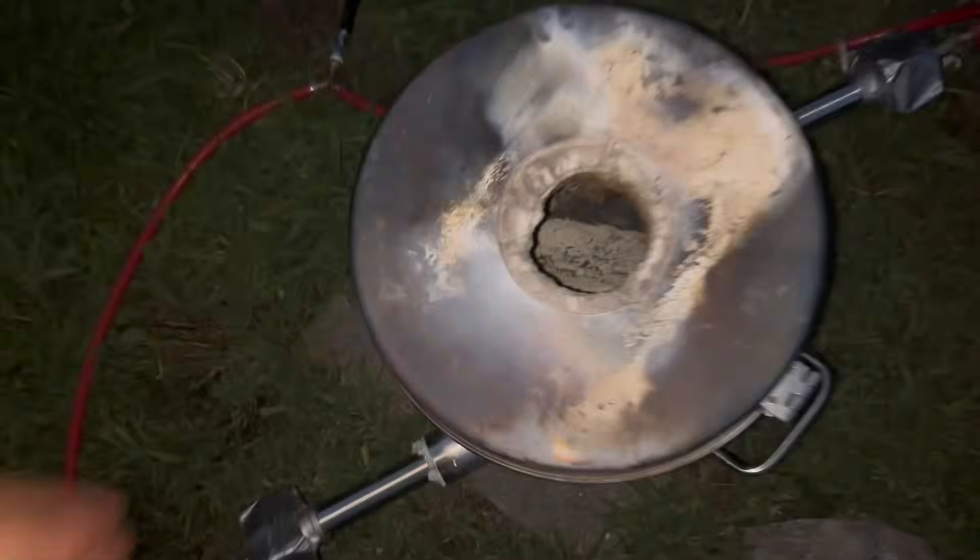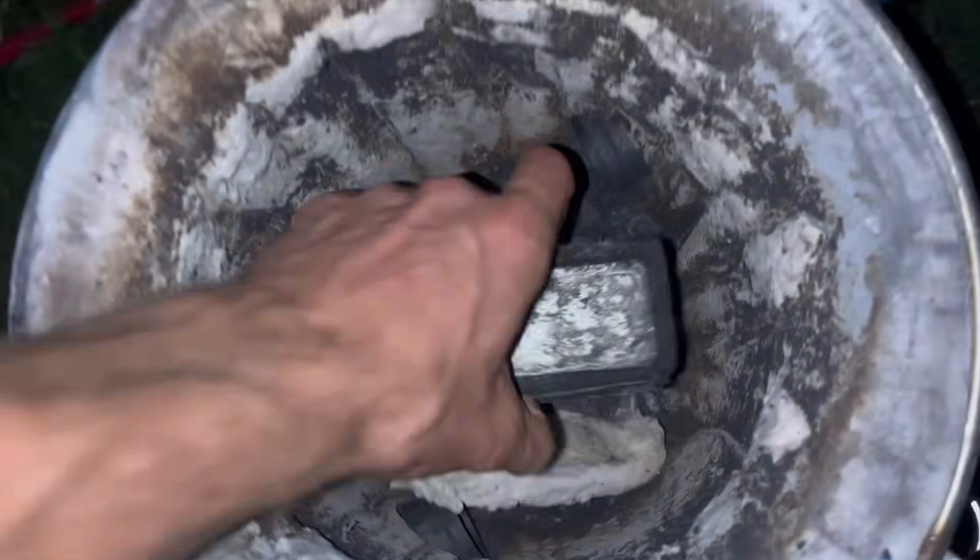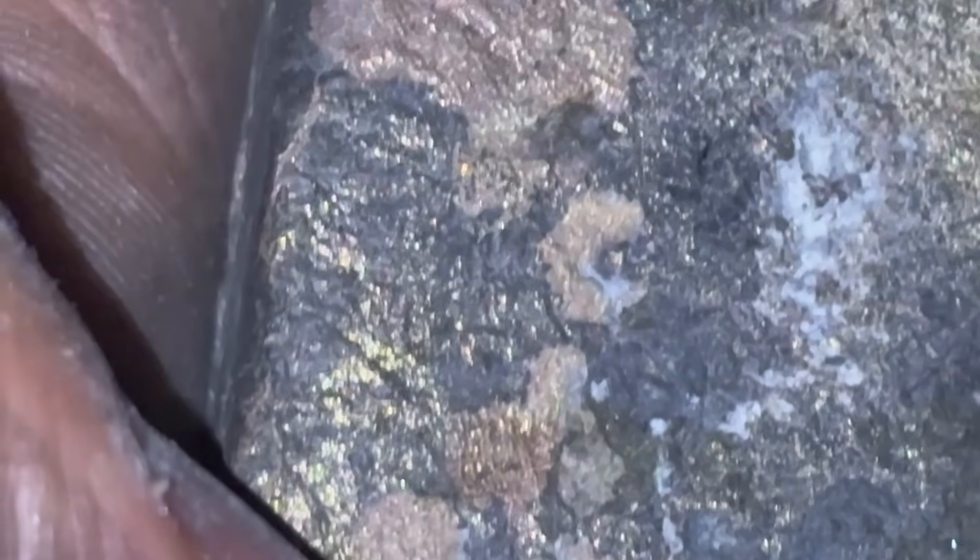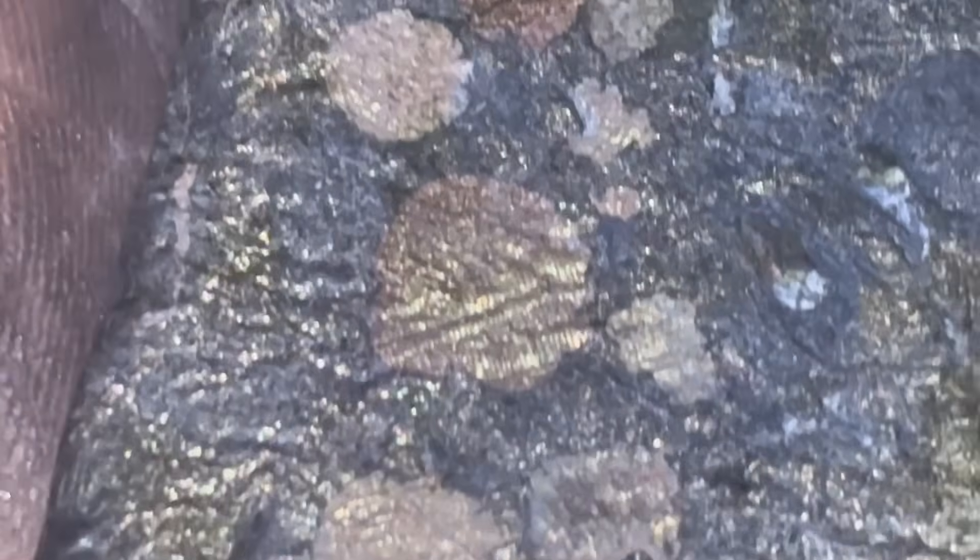And eight hours later we have a finished ingot ready to grind and polish. Upon closer examination of the ingot you can actually see some of the dendrites already without even polishing. Those are those little cross-hatched areas. Now normally these features are on the scale of microns but here they're obviously much bigger only thanks to that slow cooling.